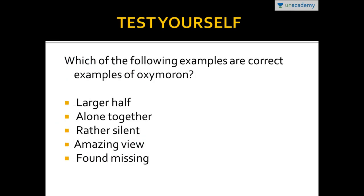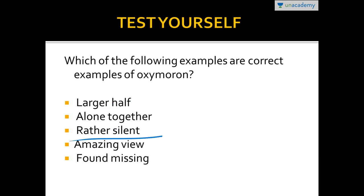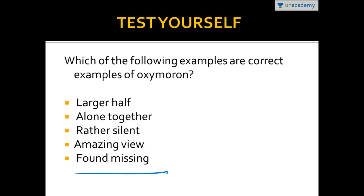Here is the test — which of the following are correct examples of oxymoron? 'Larger half' is correct because half implies something small and large implies big. 'Alone together' is correct because if you are alone, how can you be together? 'Rather silent' is not an example of oxymoron as there are no two contradicting ideas, nor is 'amazing views.' 'Found missing' is an example — found means you discovered something, and missing means it is lost, so found missing placed together is an oxymoron.